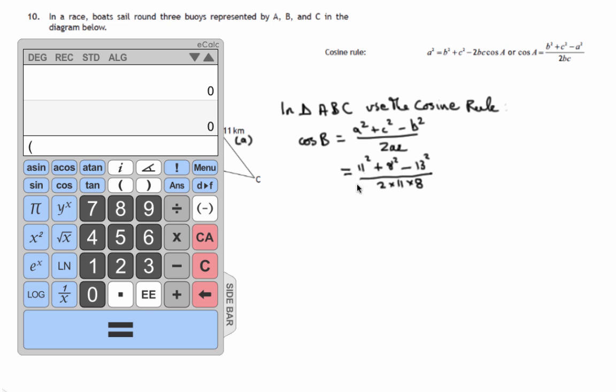So I'm going to use brackets for that. So it's brackets, 11 squared plus 8 squared minus 13 squared. Close my brackets. That will calculate the whole of the top line. Then we have to divide,